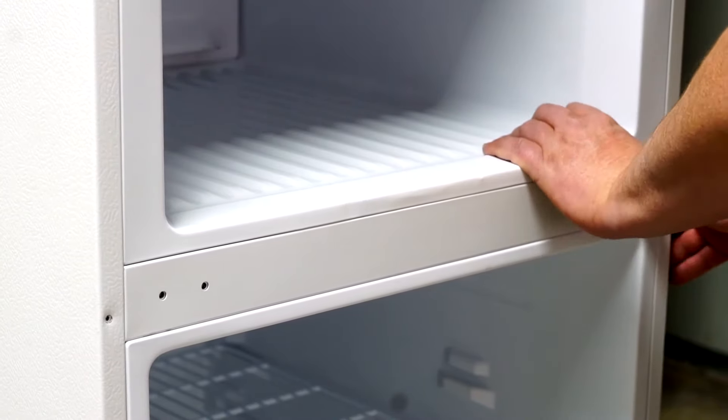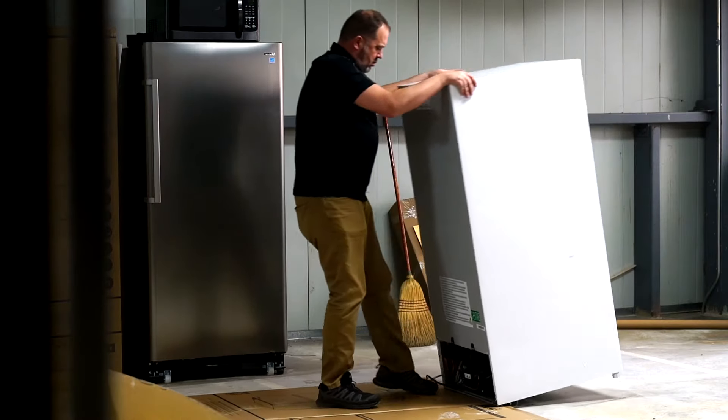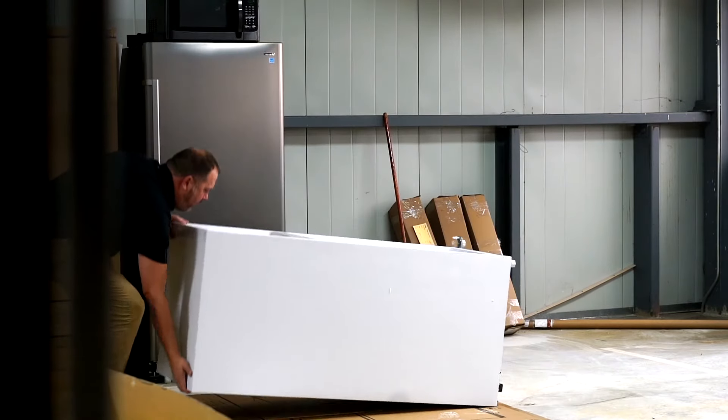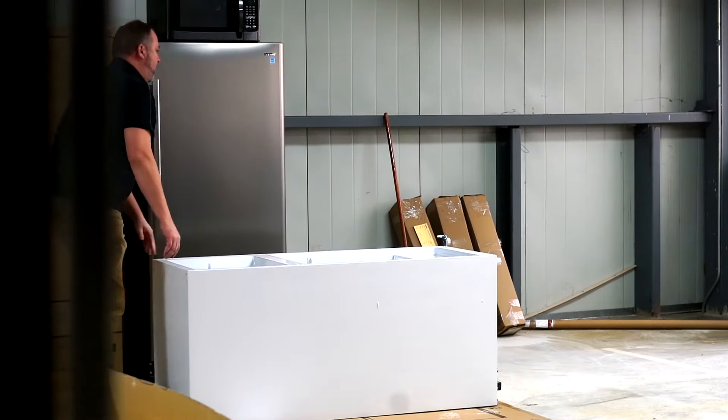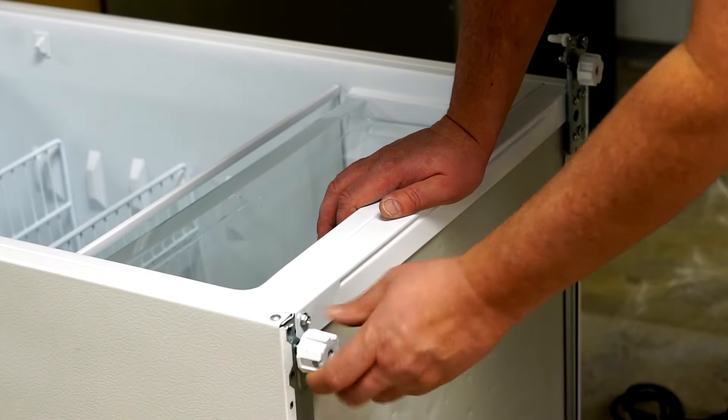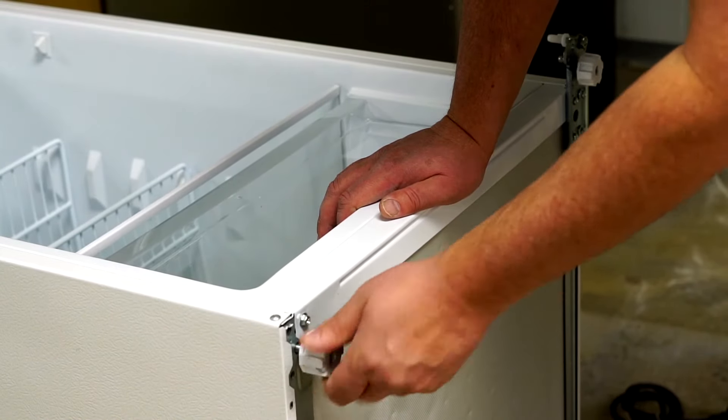It is often easier to work underneath the unit by laying it on its back. Our first step when it is on its back is to remove the left hand leveling leg.